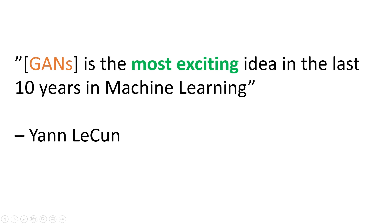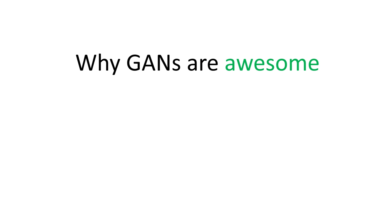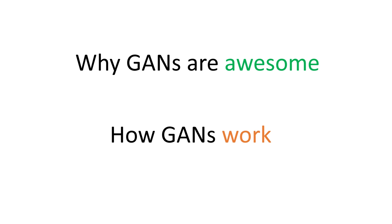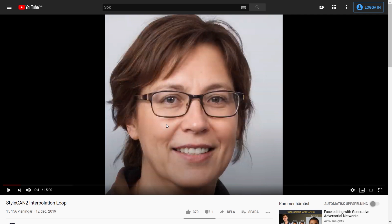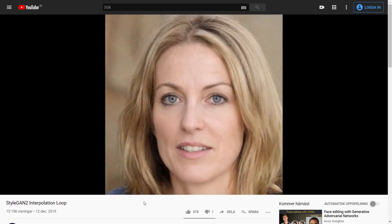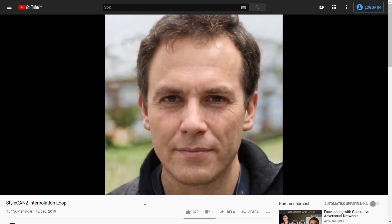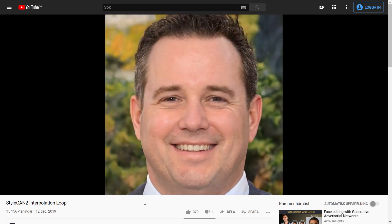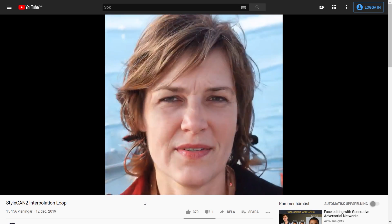GANs is the most exciting idea in the last 10 years in machine learning, according to Yann LeCun. In this video, we want to see why GANs are awesome and understand how GANs work, getting a general understanding we can build on in future videos when we actually implement these things. They can seamlessly transform between different people, which is incredibly impressive because it means the model has learned some inherent structure of the data.